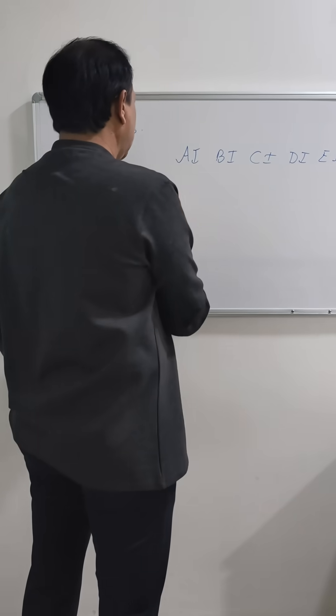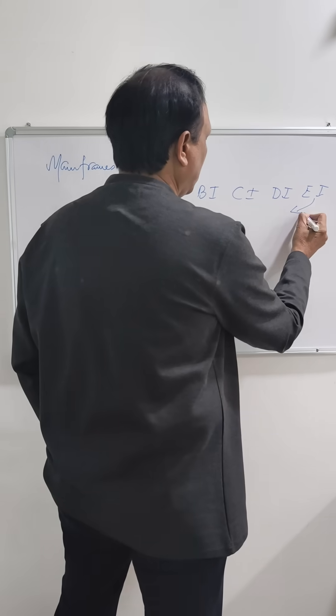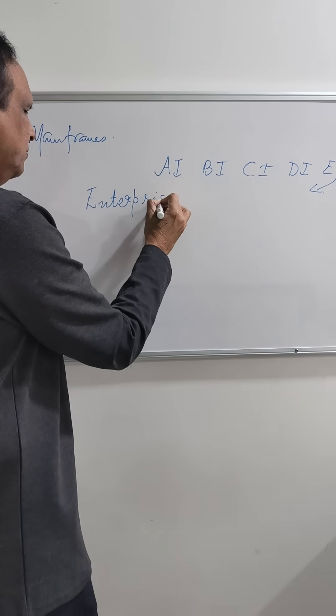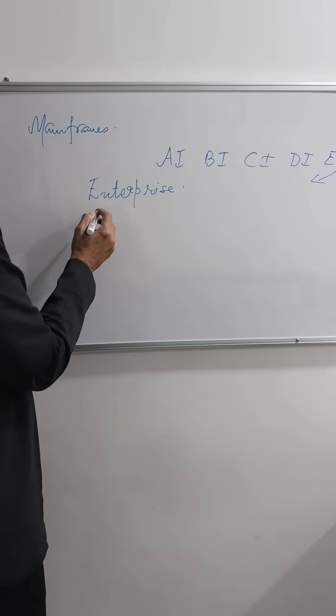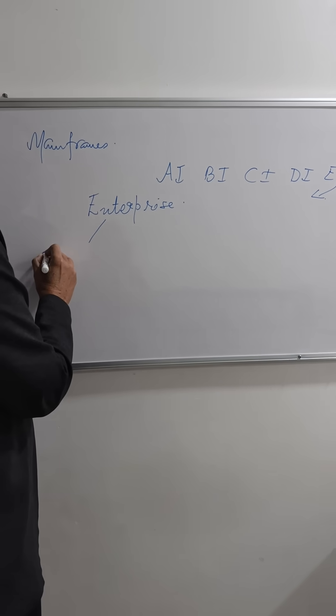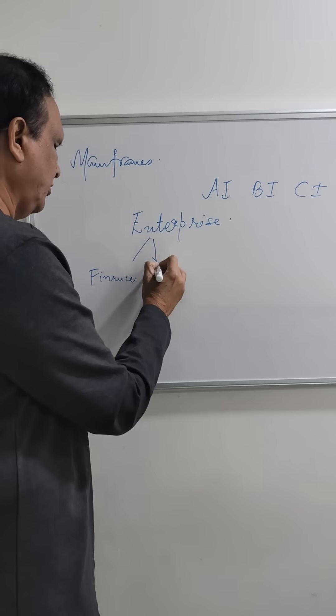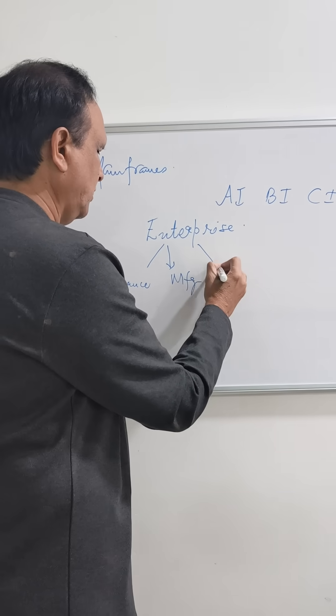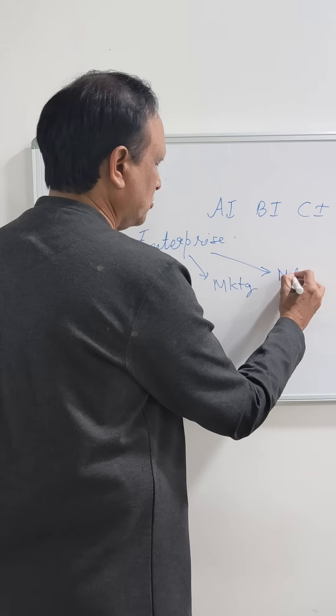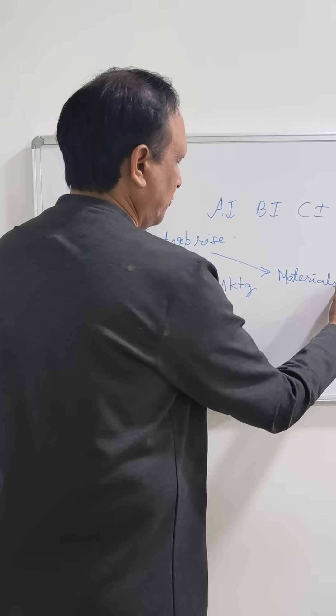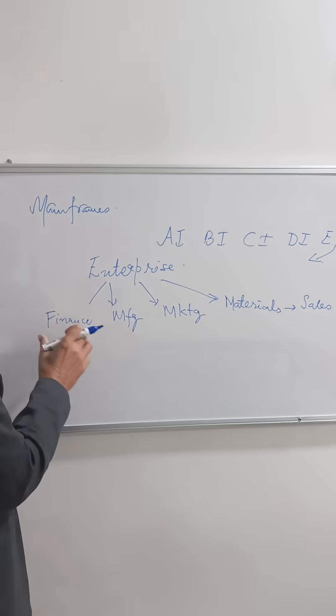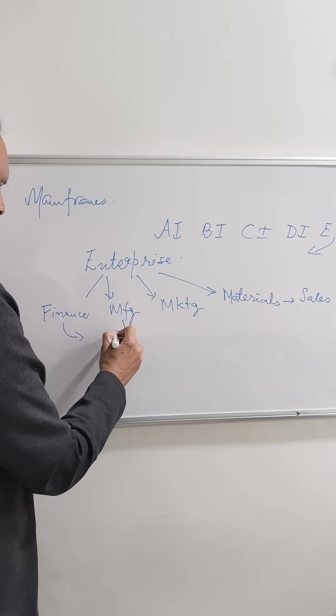So if you look at it, like we see AI. Basically, we are talking about a particular enterprise. So what exactly is an enterprise? An enterprise is nothing but it will be having different kinds of functionalities. Like for example, you will have a finance department, manufacturing, marketing, materials, sales, etc. So if you look at all these particular things, each had a functionality to work upon, right?